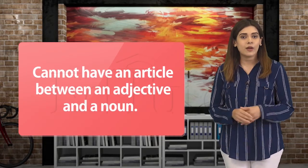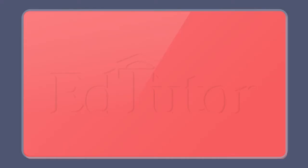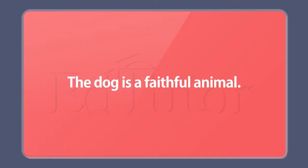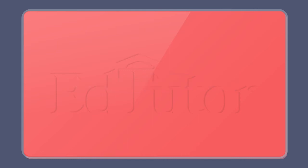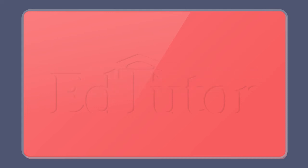Remember, we cannot have an article between an adjective and a noun. For example: 'The dog is a faithful animal.' Notice the article 'a' is used, although the noun 'animal' begins with a vowel sound. This is because the adjective 'faithful' begins with the consonant f. The article changes according to the word that it appears before, rather than just the noun being used.